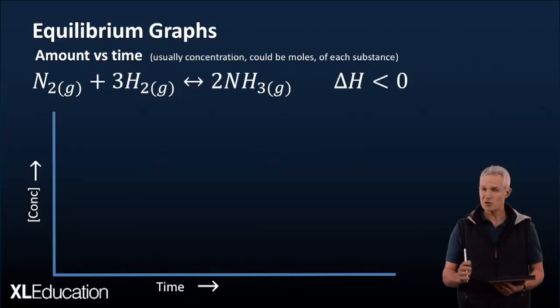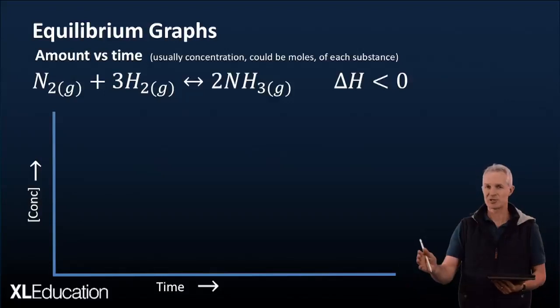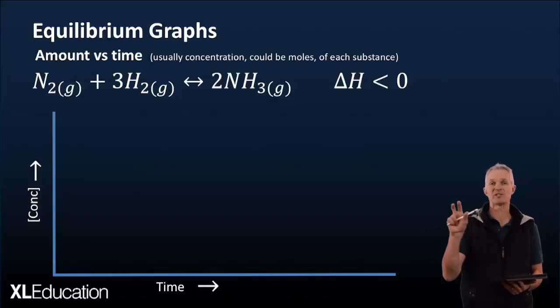Let's jump straight into it. There's two types of graphs. One of them is a concentration graph. A concentration graph tells us how much of each substance there is on the y-axis and, of course, against time. So it's like a story of how much of each stuff there is. As many substances as there are,